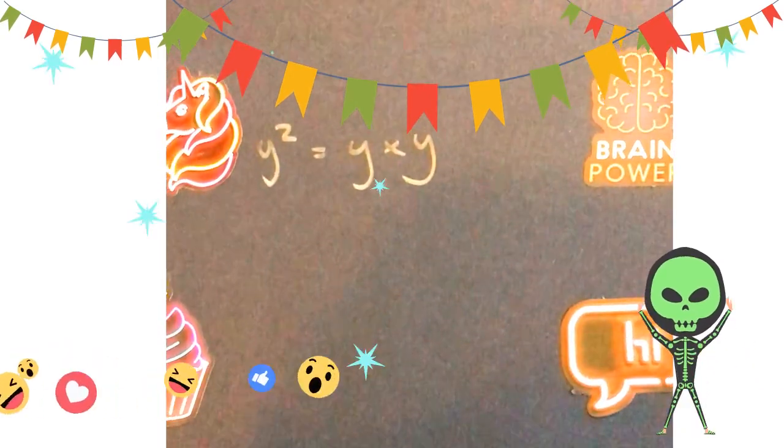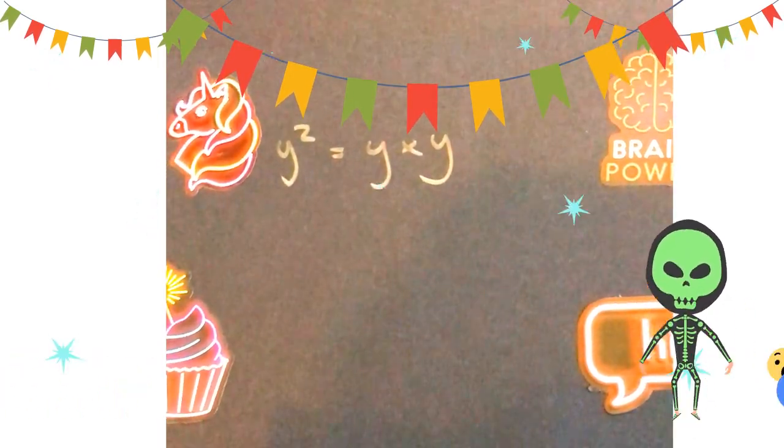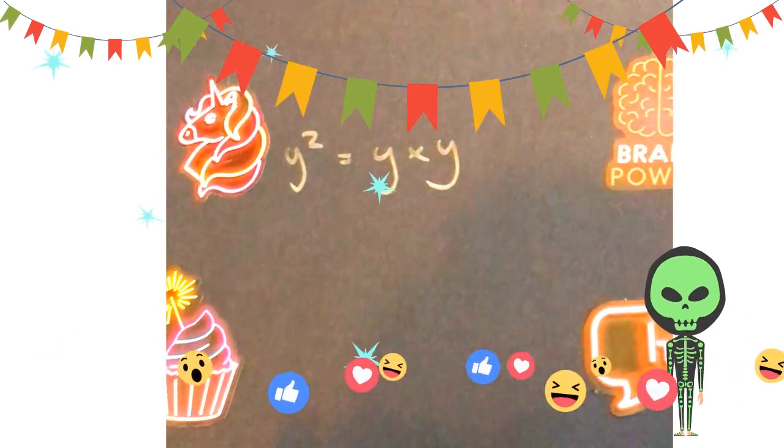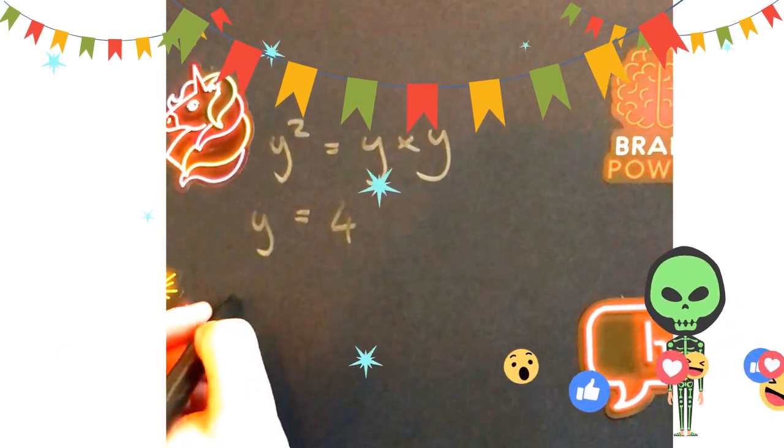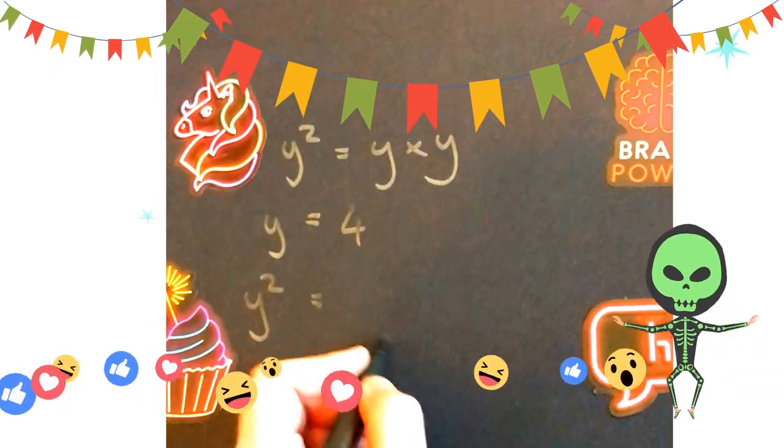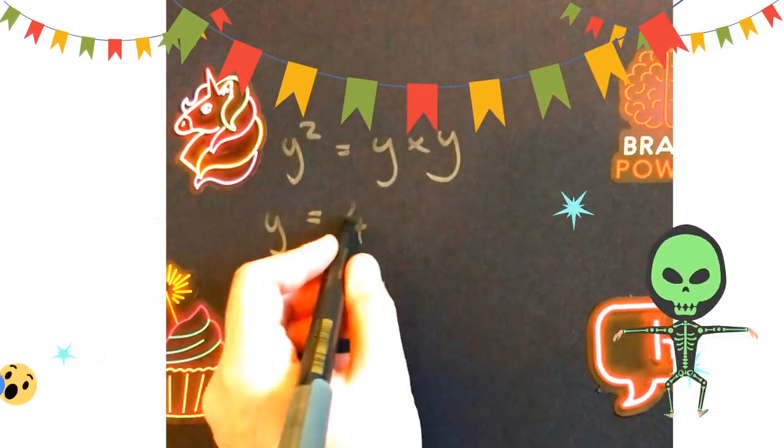So when I'm substituting into this, I need to remember that I'm multiplying it by itself. So if y was equal to 4 and I wanted to know what y squared was, then I would do y times by y, which is the same as 4 times by 4, which is 16.